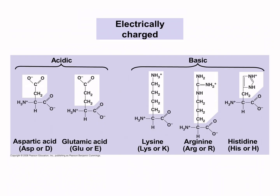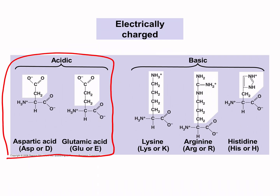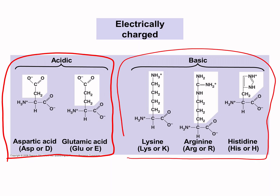We have amino acids that can give away the proton — these are the aspartic acid and glutamic acid, and therefore are acidic amino acids — or those who can receive a proton, such as lysine, arginine, and histidine, which basically become positively charged and therefore are called basic amino acids.